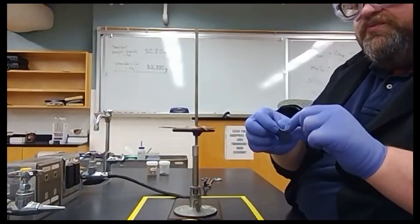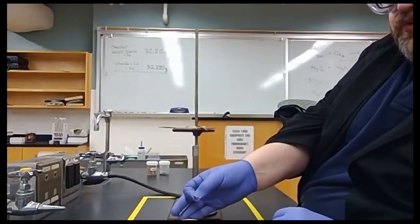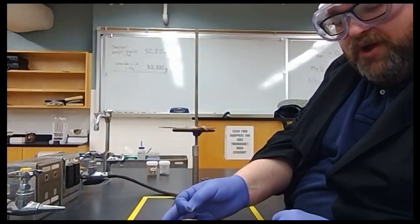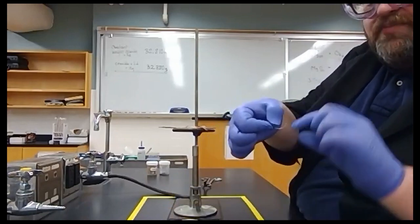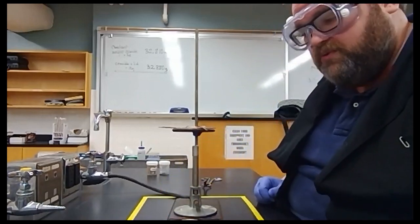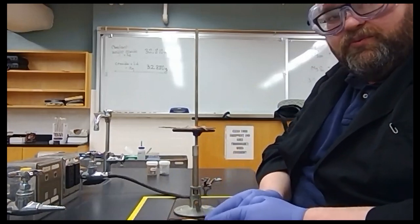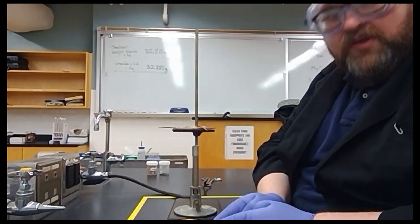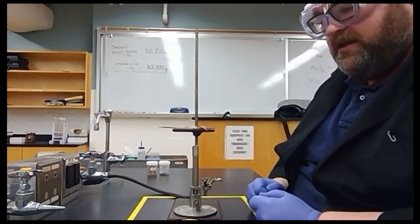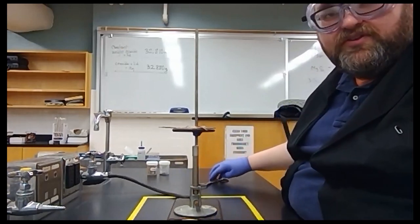We're going to slightly curl our ribbon. We need this ribbon to sit really tightly against the bottom of the crucible. So we're going to curl it up into a smiley face shape and then we're going to drop it right into the bottom of the crucible. We're going to weigh the crucible with the magnesium and the lid so that we can obtain the mass of the magnesium.